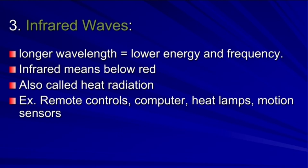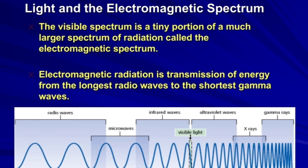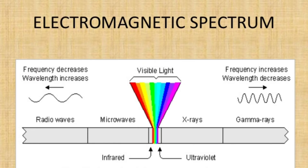Examples of infrared applications include remote controls, computers, heat lamps, and motion sensors. Next is the visible light spectrum, which can be continuously detected by your eyes. As you can see in the picture, the visible spectrum is a tiny portion of the electromagnetic spectrum. As frequency increases, wavelength decreases, and vice versa. Starting from the longest, we have radio waves, all the way to the shortest — gamma rays.